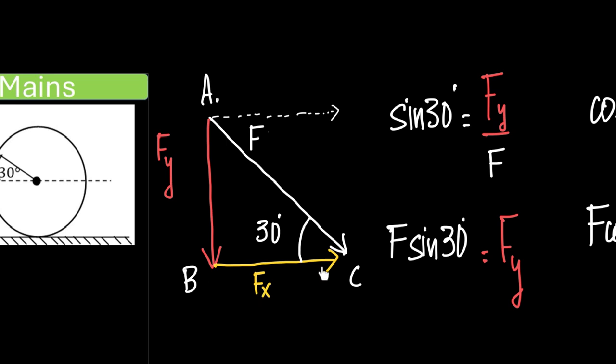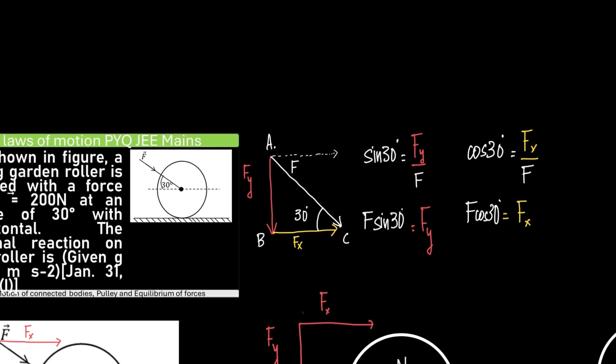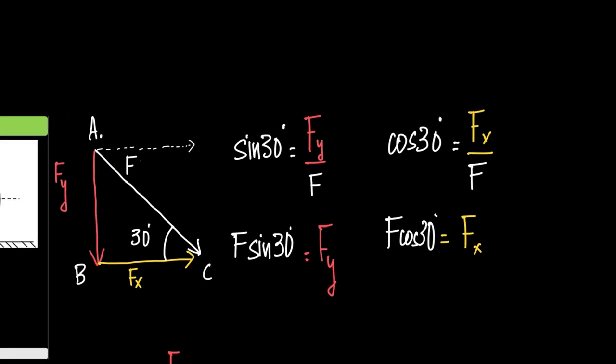Now, from this triangle ABC, what is sine 30 equal to? Sine 30 is opposite by hypotenuse. What is opposite? Fy. What is hypotenuse? F. So we have Fy by F. And therefore, what is Fy? Fy is equal to F into sine 30. You see, you have a doubt there. We'll fix it.